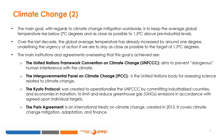Today the UNFCCC has near-universal membership. The 197 countries that have ratified the convention are called parties to the convention. The ultimate objective of the convention is to stabilize greenhouse gas concentrations at a level that would prevent dangerous anthropogenic interference with the climate system, within a time frame sufficient to allow ecosystems to adapt naturally, ensure food production is not threatened, and enable economic development to proceed sustainably.